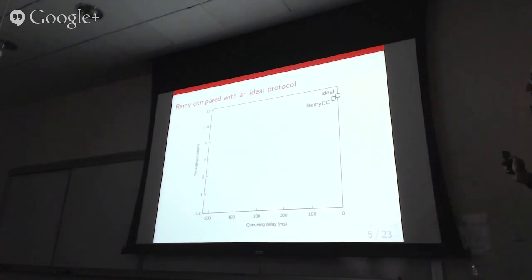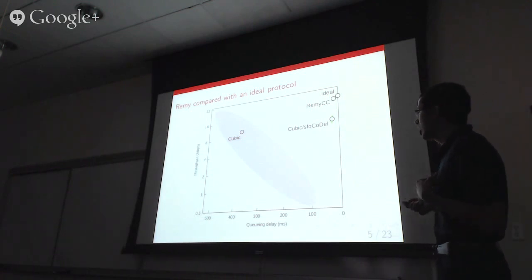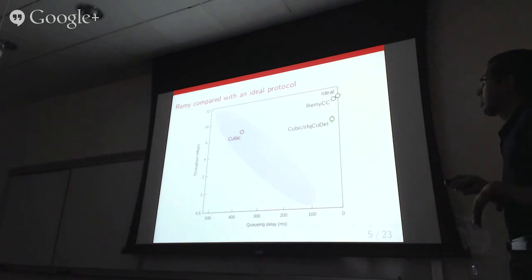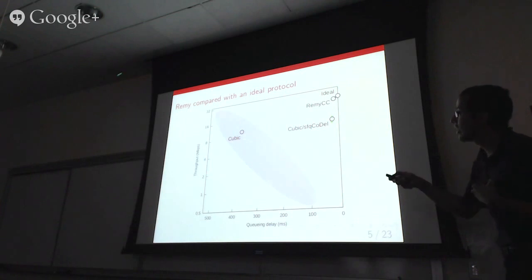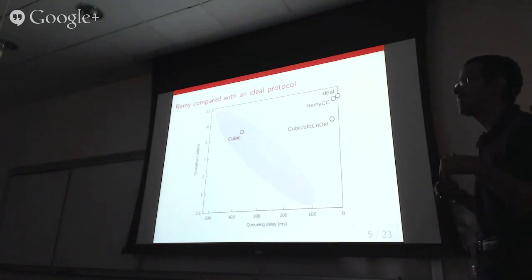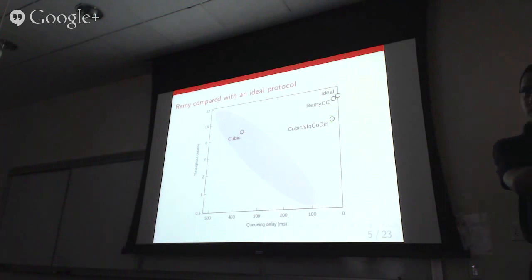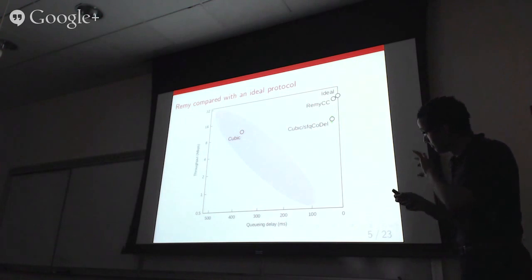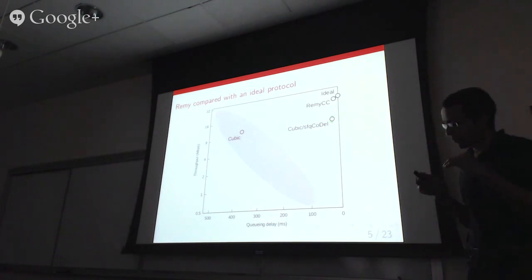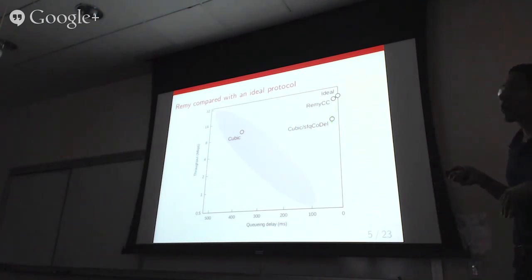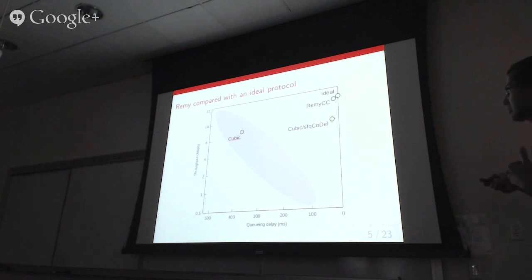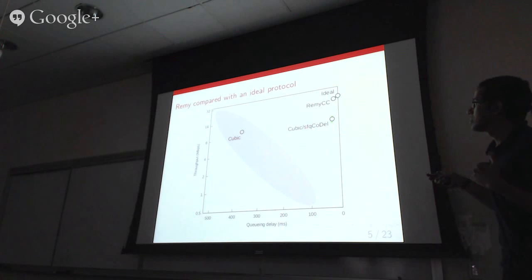For comparison, here's where two commonly used algorithms lie. TCP Cubic as implemented within Linux is the default congestion control algorithm. We also plot Cubic combined with SFQ-CoDel — Cubic at the endpoints combined with stochastic fair queuing and the CoDel queue management algorithm, which keeps queue lengths small by dropping packets. As expected, Cubic over SFQ-CoDel has lower queuing delay, but both algorithms have significantly lower throughput than the RemyCC.